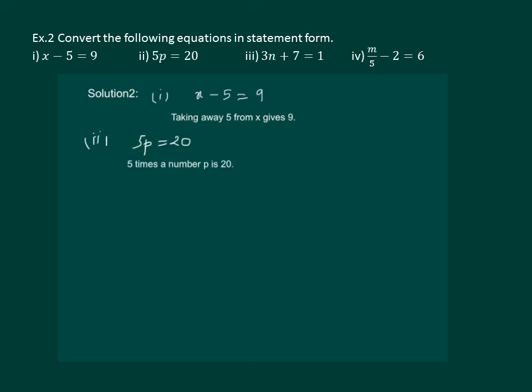Let us move to the third part. It says 3n plus 7 equal to 1. This can be written as: